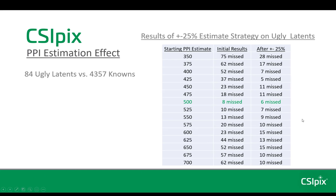And for the ugly latents, the strategy did help — even at 500 PPI for these, maybe because of deposition pressure or because the minutiae were spread apart in some of the images. At 350 PPI, just running the single APHIS search initially missed 75. It got down to 28 after doing the plus and minus 25%. At 700 PPI, it went from 62 missed to 10. So the results were really pretty good.